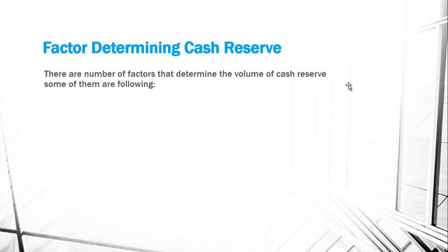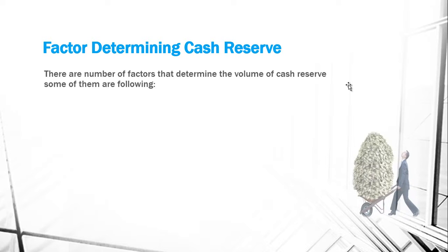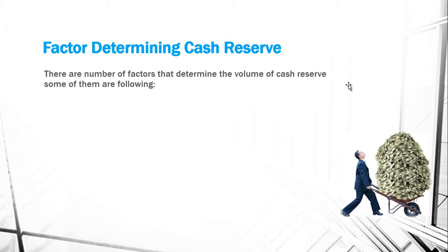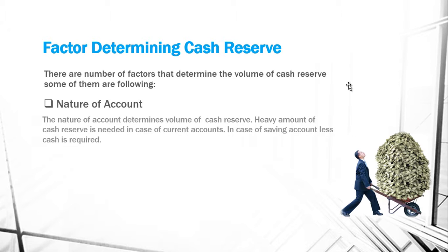First, factors determining cash reserve. There are a number of factors that determine the volume of cash reserve. Some of them are following. Nature of account: the nature of account determines the volume of cash reserve. A heavy amount of cash reserve is needed in case of current accounts. In case of saving accounts, less cash is required.